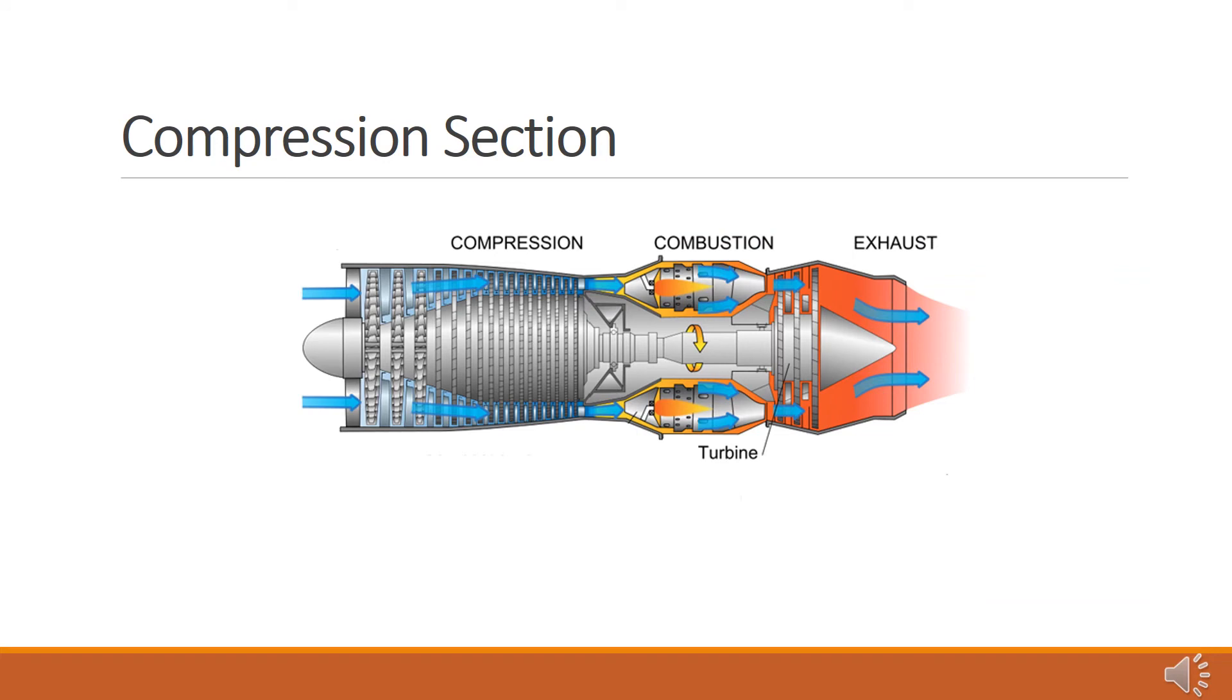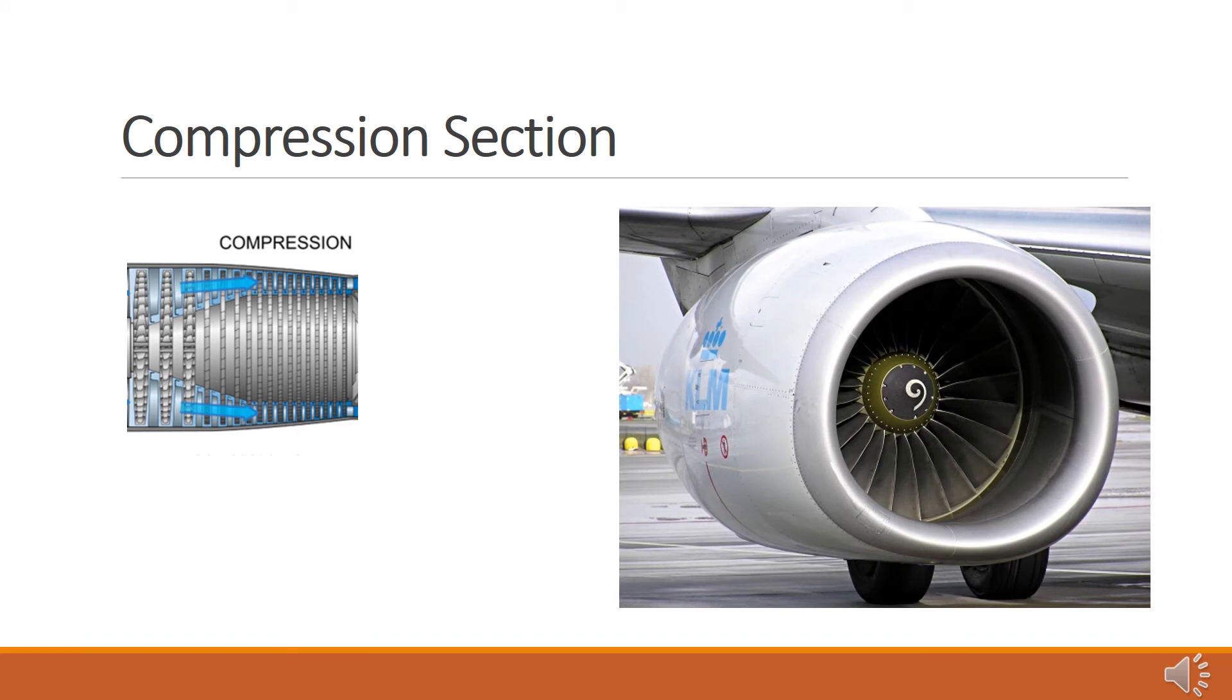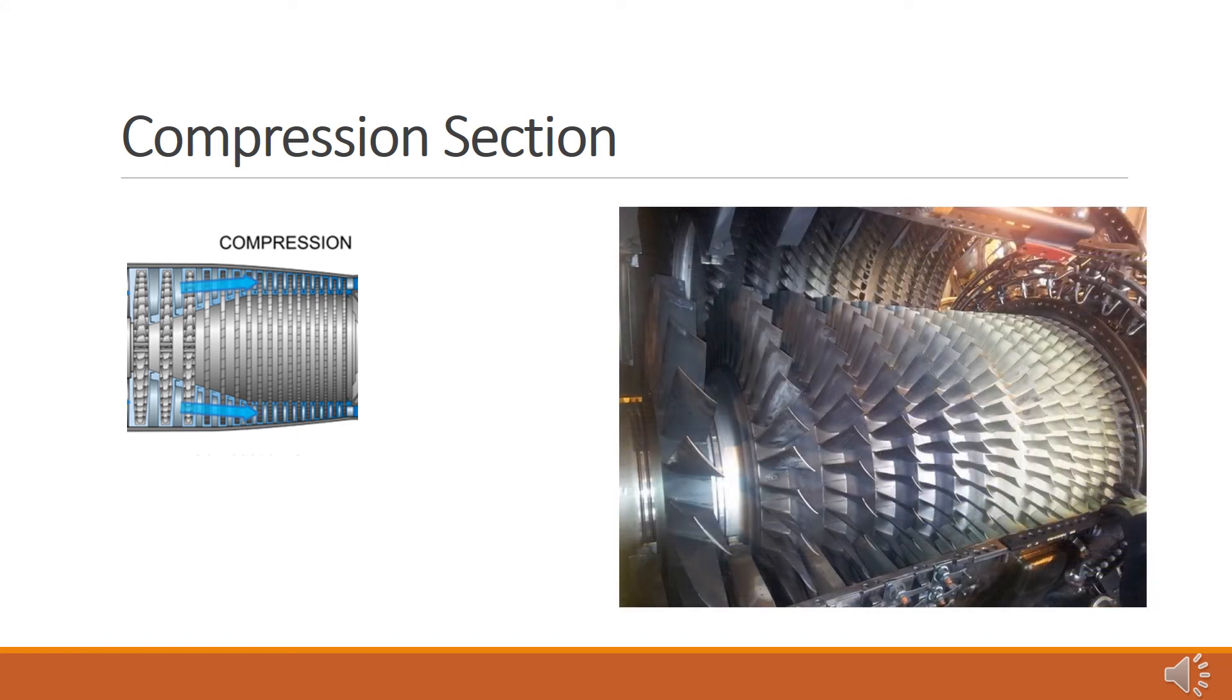As jets fly at altitudes where there is limited oxygen for combustion, jet engines have the ability to compress air and increase its pressure. This increases the mass flow rate through the engine enabling it to produce thrust at higher altitudes. This is achieved by a compressor which is located behind the inlet. The compressor is made up of rows of blades shaped like wings. In modern aircraft, there are two or three compressor stages that run at different speeds giving the air different levels of pressure. Each stage consists of rotating blades and stationary stators or vanes. As the air moves through the compressor, its pressure and temperature increase.